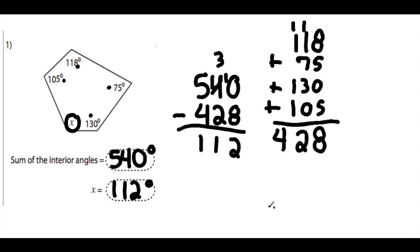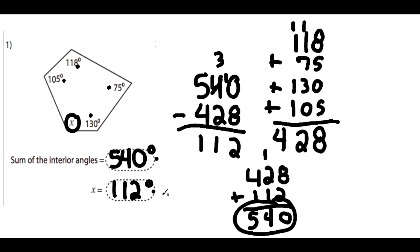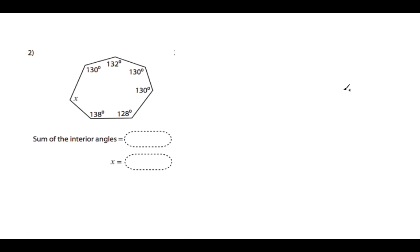Just to double-check, we can take our four original angles — which summed to 428 — and add that to our missing angle of 112. This should equal the angle sum of the pentagon, which is 540 degrees. Checking: 8 plus 2 is 10, carry the 1; 2 plus 1 is 3, plus 1 is 4; and 4 plus 1 is 5 — giving us 540. So the correct angle measurement for x is 112 degrees.